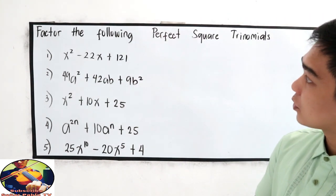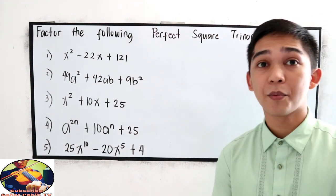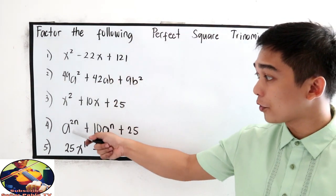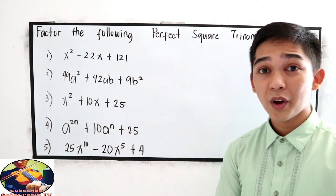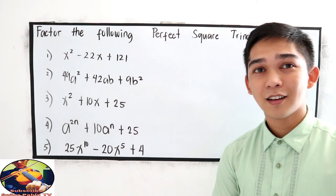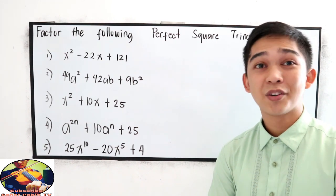Now, direction: factor the following perfect square trinomials. So we have numbers 1, 2, 3, 4, 5. If you want to try, you can pause the video. Then after answering, you can resume watching.